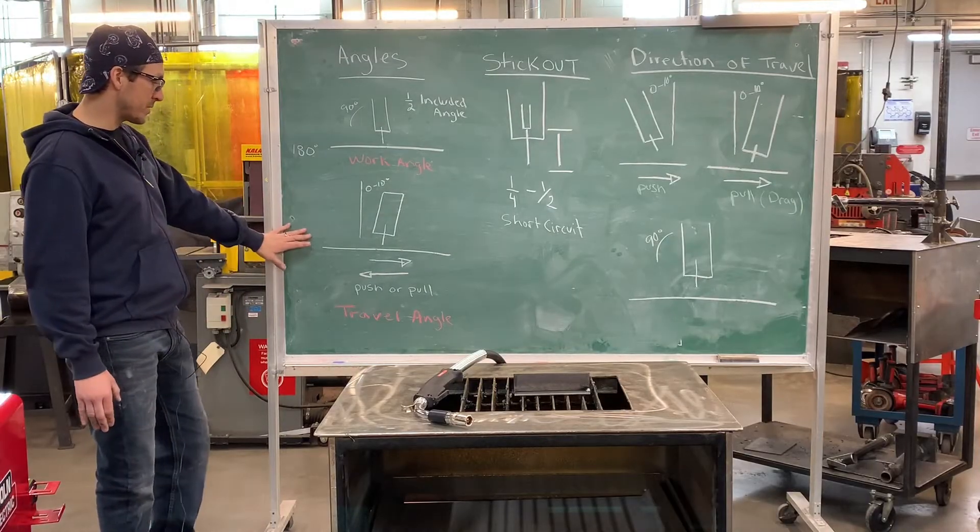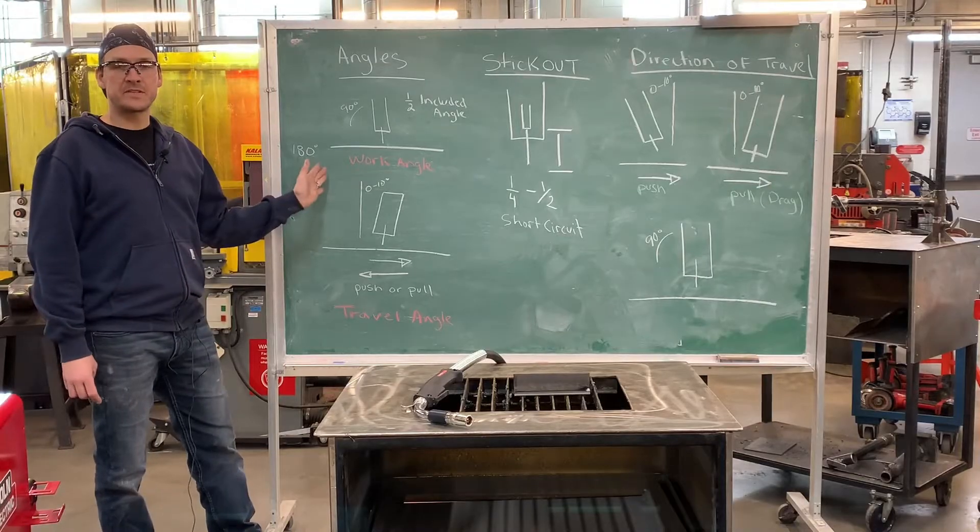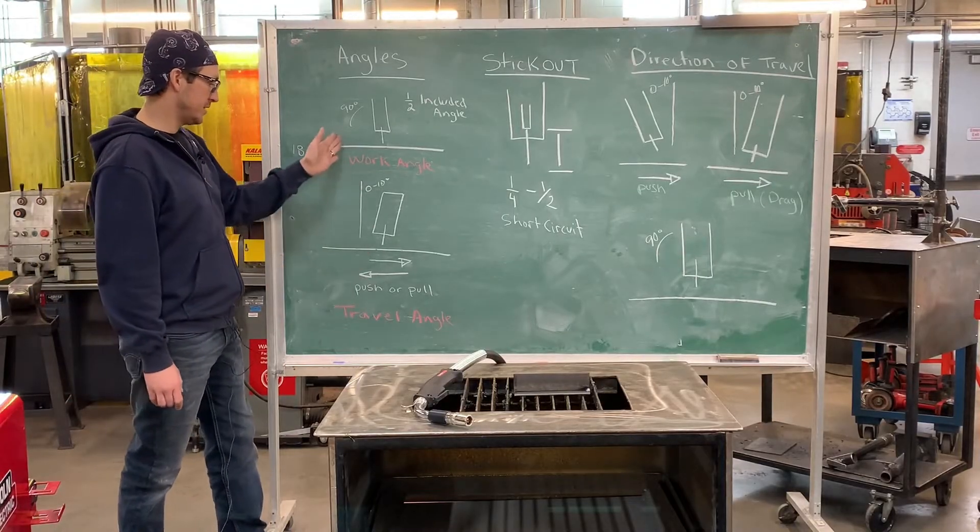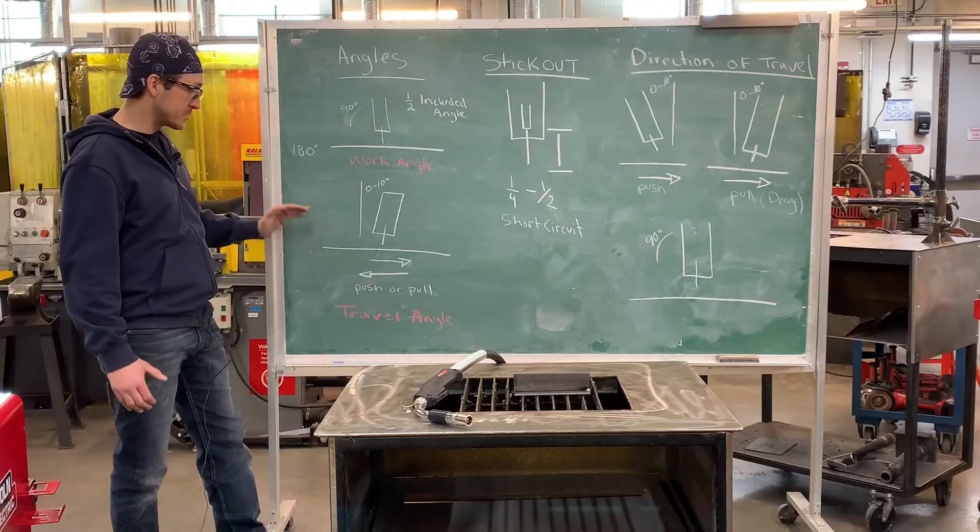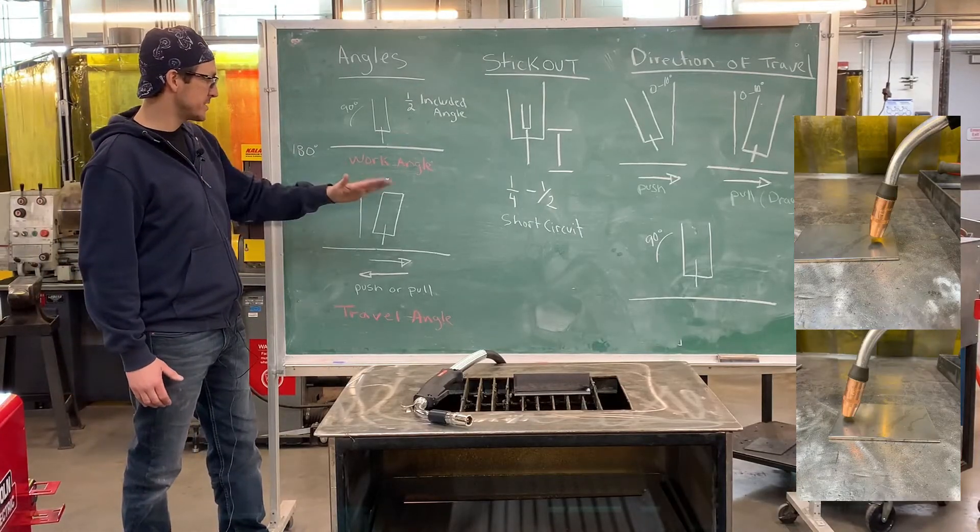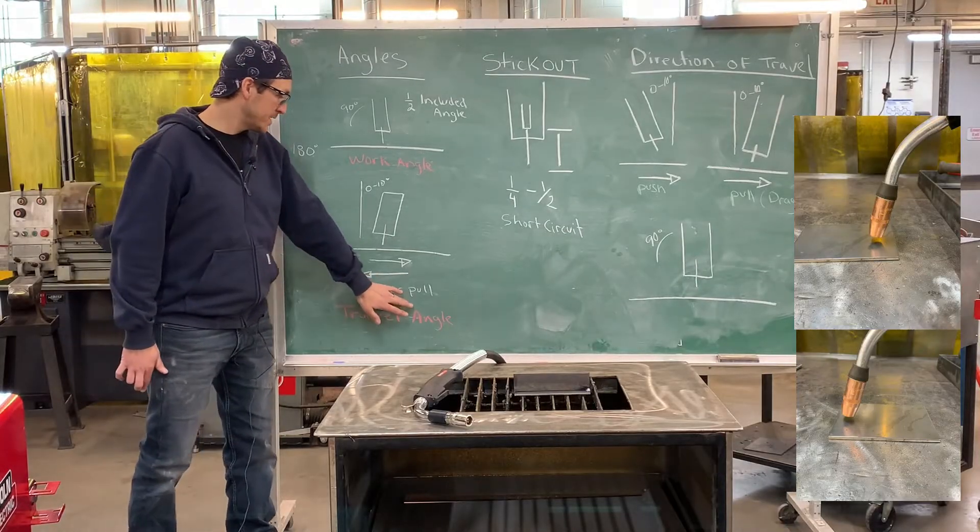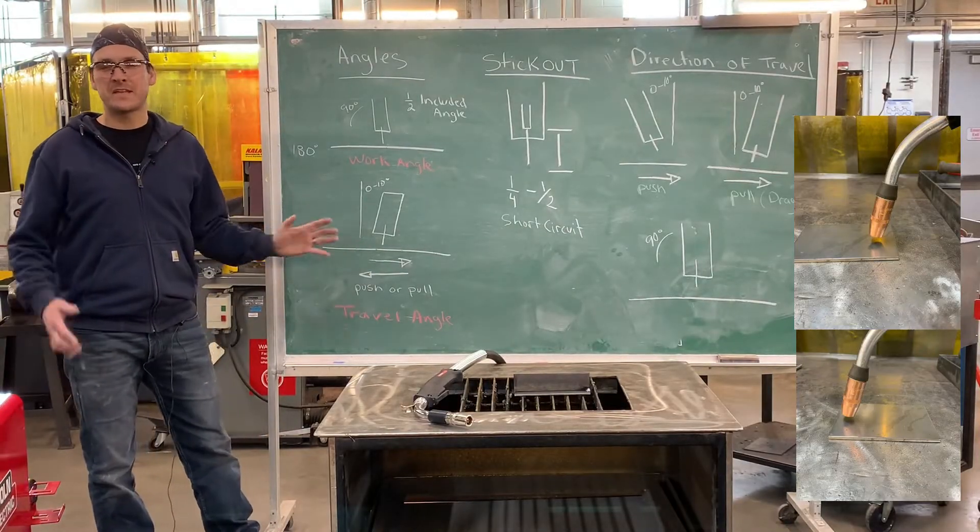The next angle I want to talk about is your travel angle. Your travel angle should be within 0 to 10 degrees off of 90. The travel angle is the direction that you're moving in—how far off 90 degrees you should be. Whether pushing or pulling, we want to stay within 10 degrees of that.